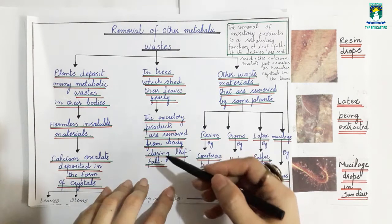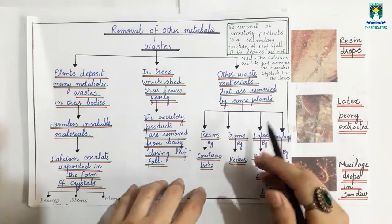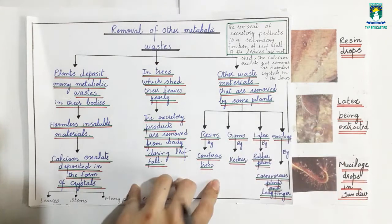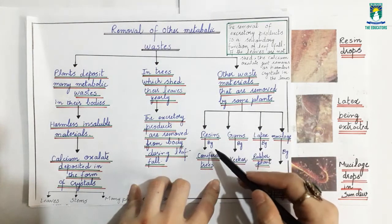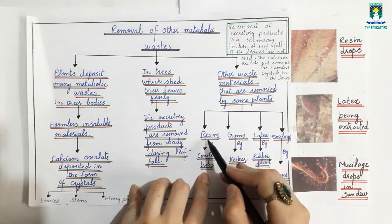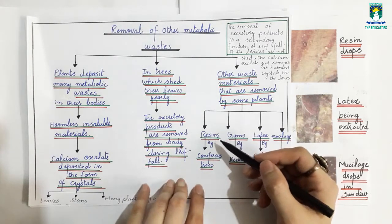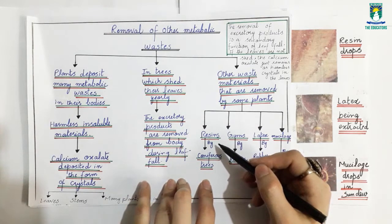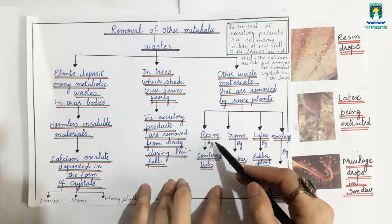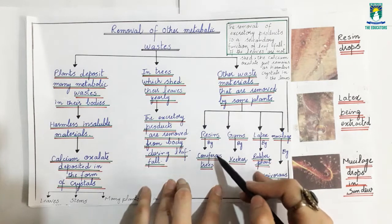When leaves fall, the metabolic waste stored in them is ultimately removed from the plant's body. Some plants also produce resins as metabolic waste. Resins are released by coniferous trees. Resin is a sticky, flammable material that quickly catches fire and is used in adhesives like glue.